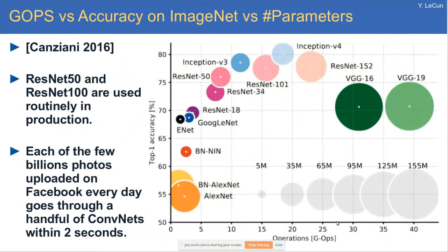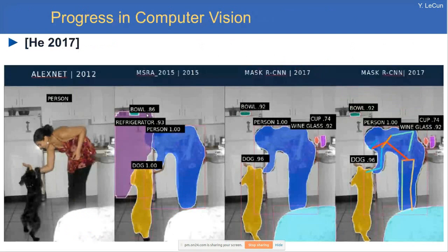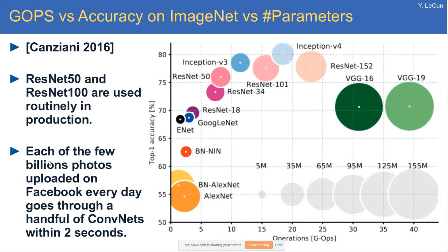This chart, produced by Alfredo Canziani at NYU, shows on the x-axis the billions of operations to compute a single output for convolutional nets of different architectures, and on the y-axis the top-1 accuracy on ImageNet — the current record is roughly 84%. There's a wide variety of architectures as people try to find the minimal architecture that gives maximum performance. This matters at scale: Facebook users upload billions of images per day, and each image goes through half a dozen different convolutional nets within two seconds of being uploaded.